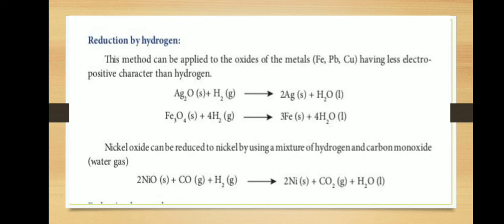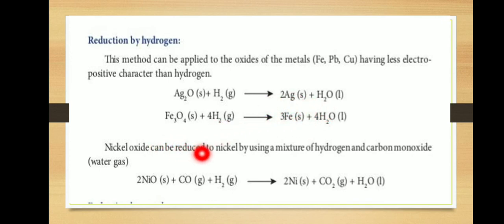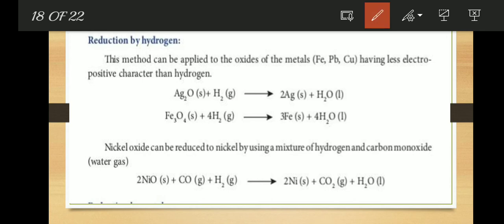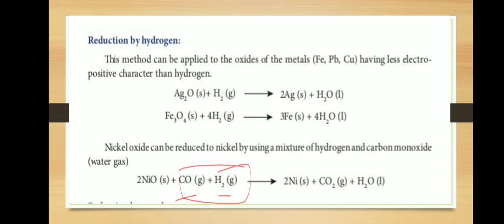Reduction by hydrogen: this method can be applied to the oxides of metals such as iron, lead, and copper, which have less electropositive character than hydrogen. For example, silver oxide reacts with hydrogen to form silver metal; iron oxide reacts with hydrogen to form iron metal. Nickel oxide can also be reduced to nickel using a mixture of hydrogen and carbon monoxide, called water gas.